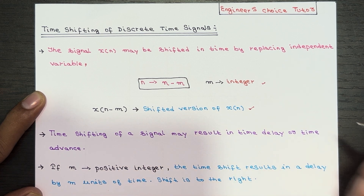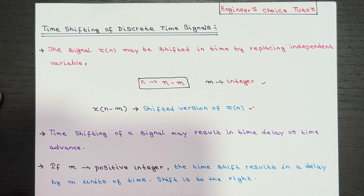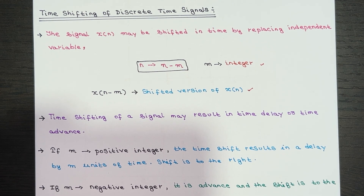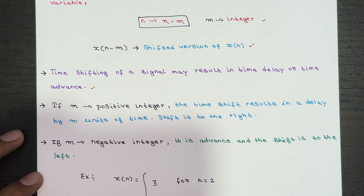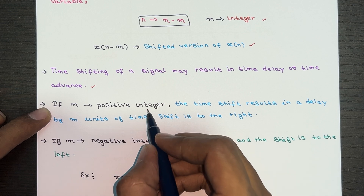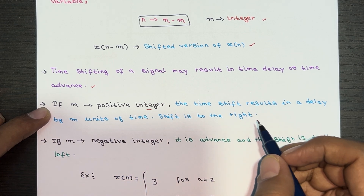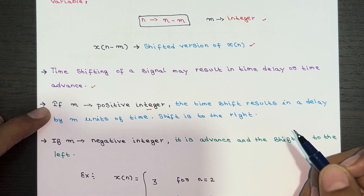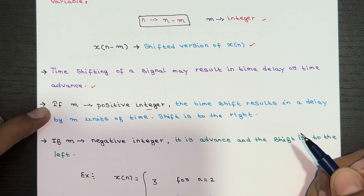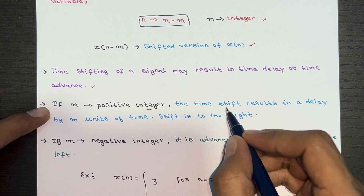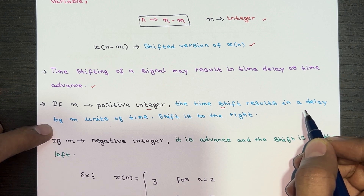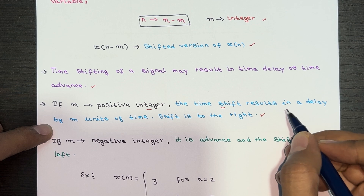What happens when we shift a signal in time? It can result in either a time delay or a time advance. If m happens to be a positive integer, then the time shift will cause a delay of m units of time. This means that each sample of X of n will be shifted to the right — imagine pressing the fast forward button on a video but for time. So if m is a positive integer, the time shift results in a delay by m units, and the shift is to the right.